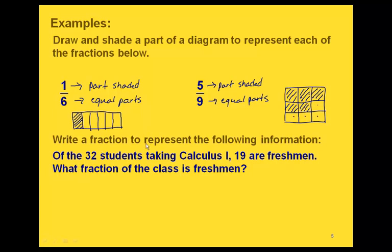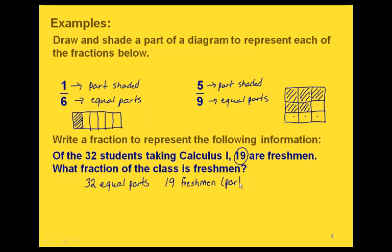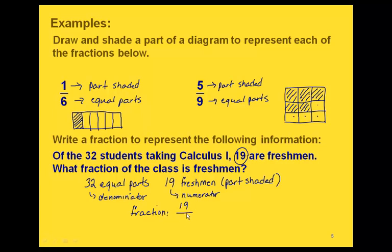Now one last example: we're going to write a fraction to represent the following information. Of the 32 students taking Calculus 1, 19 are freshmen. We can think of our Calculus class as a whole with 32 equal parts — the total number of students. The number of freshmen is 19, so 19 is our numerator and 32 is our denominator. Our fraction is 19 thirty-seconds, or 19 over 32.